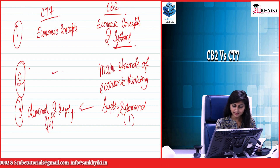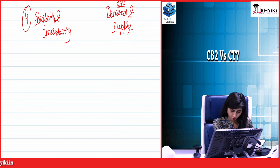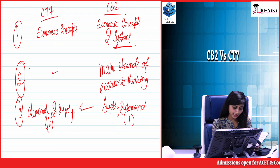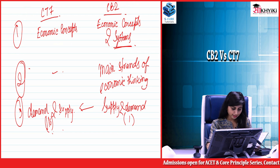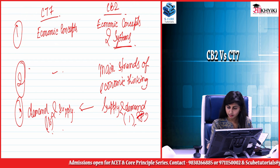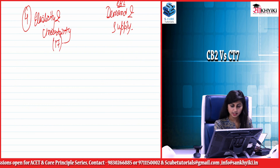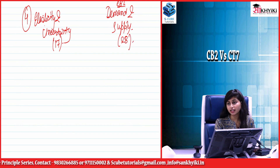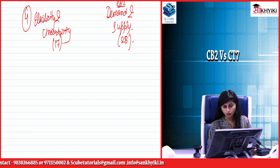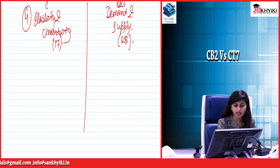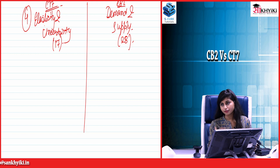So these two chapters — demand and supply, and elasticity and uncertainty — are replaced by Supply and Demand Part 1 and Part 2. The difference in depth is clear from the page counts: demand and supply was 16 pages in CT7, whereas Supply and Demand Part 1 is 21 pages. Elasticity and uncertainty had 17 pages, whereas Part 2 has 28 pages of core reading material, plus additional books you must follow.